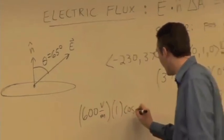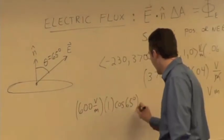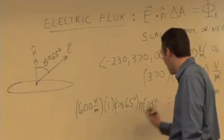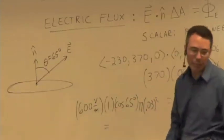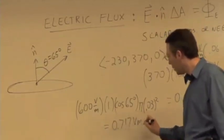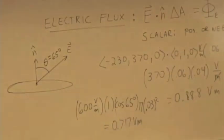Times the cosine of 65 times pi r squared, pi times 0.03 squared. And I believe that works out to be 0.717 volts times meters. Are we okay with that?